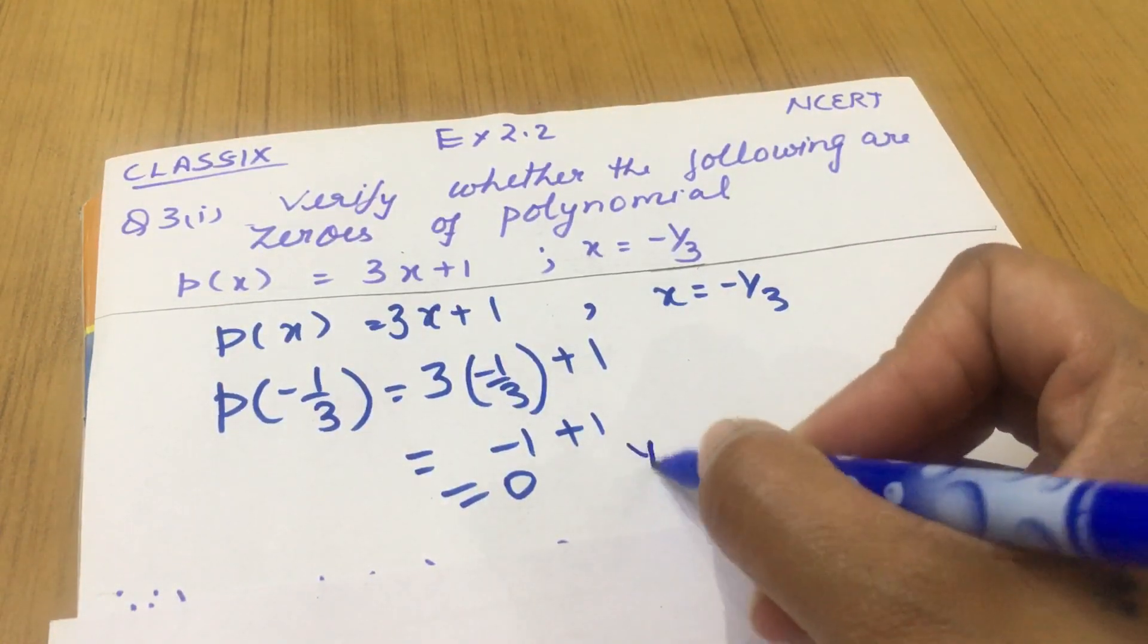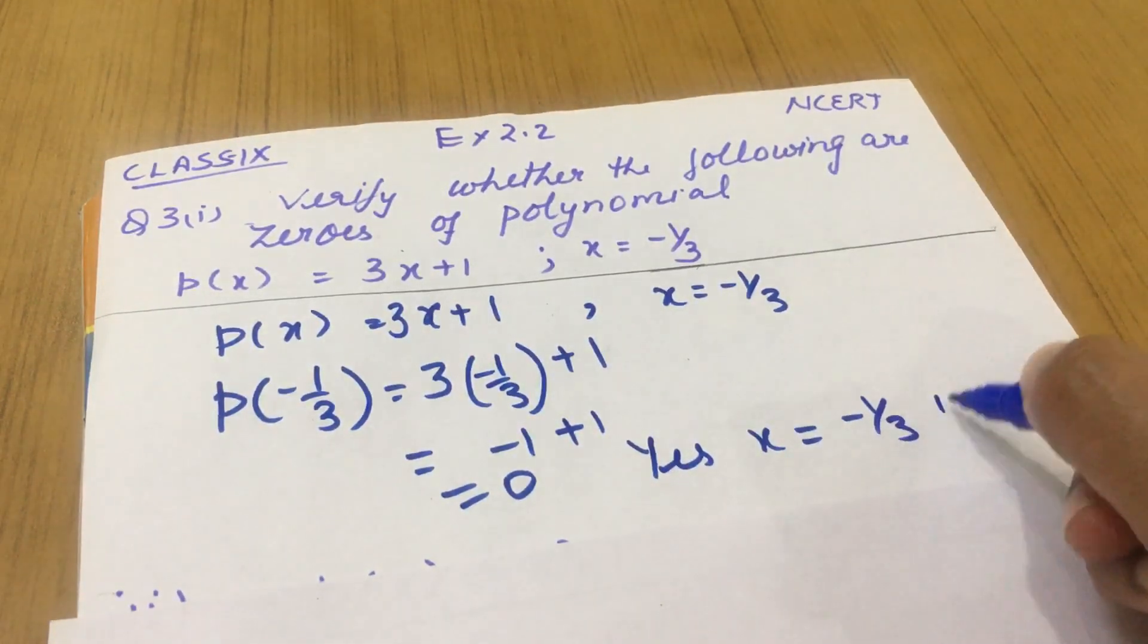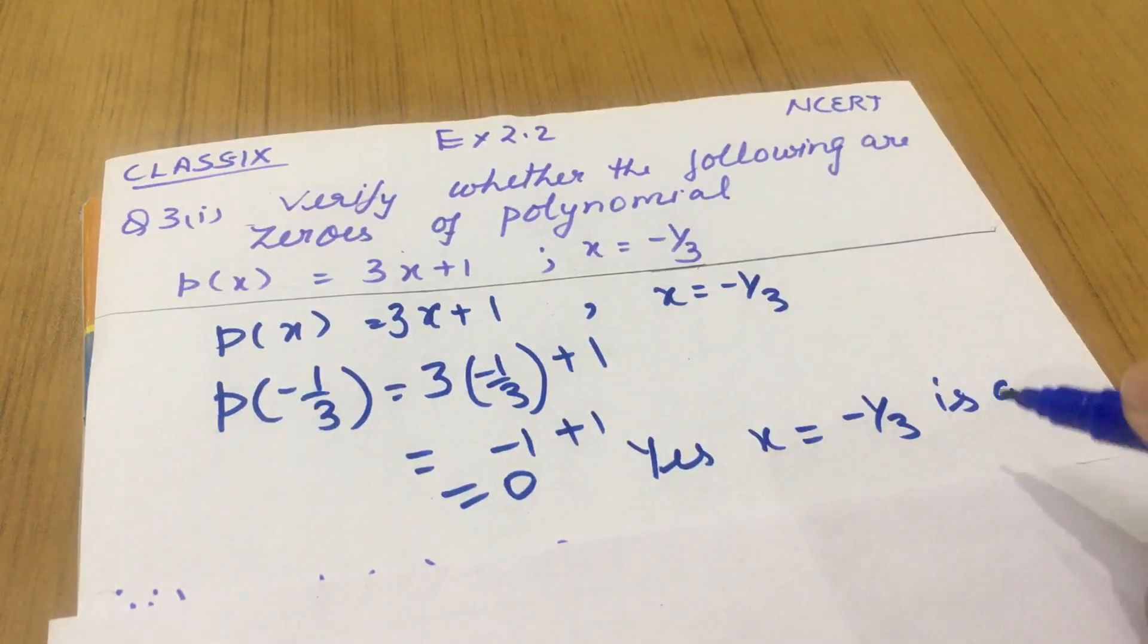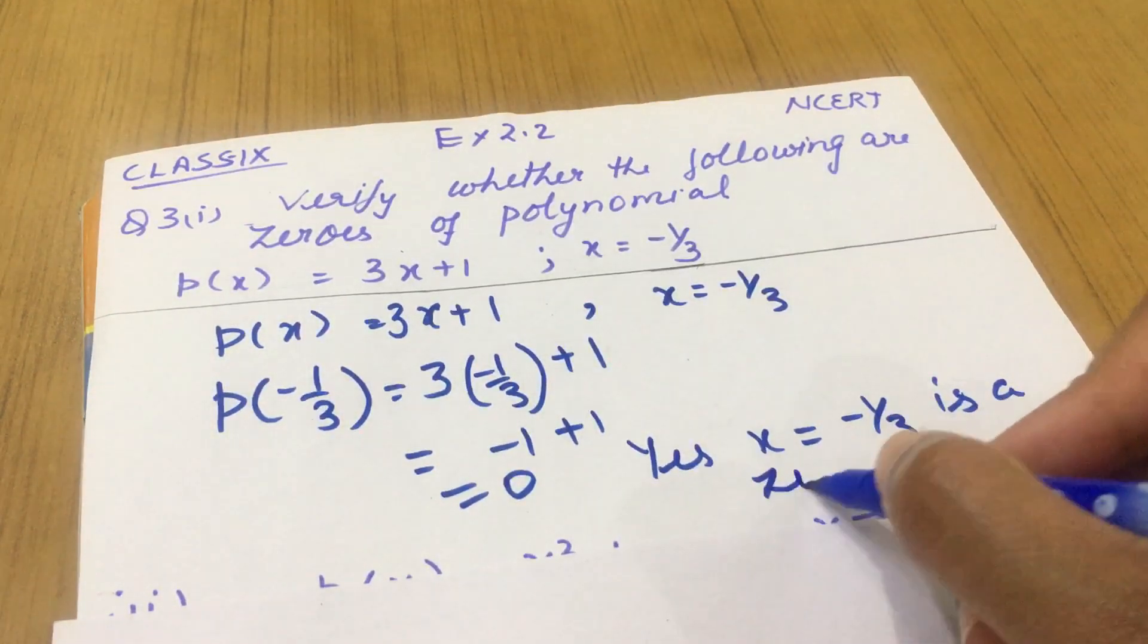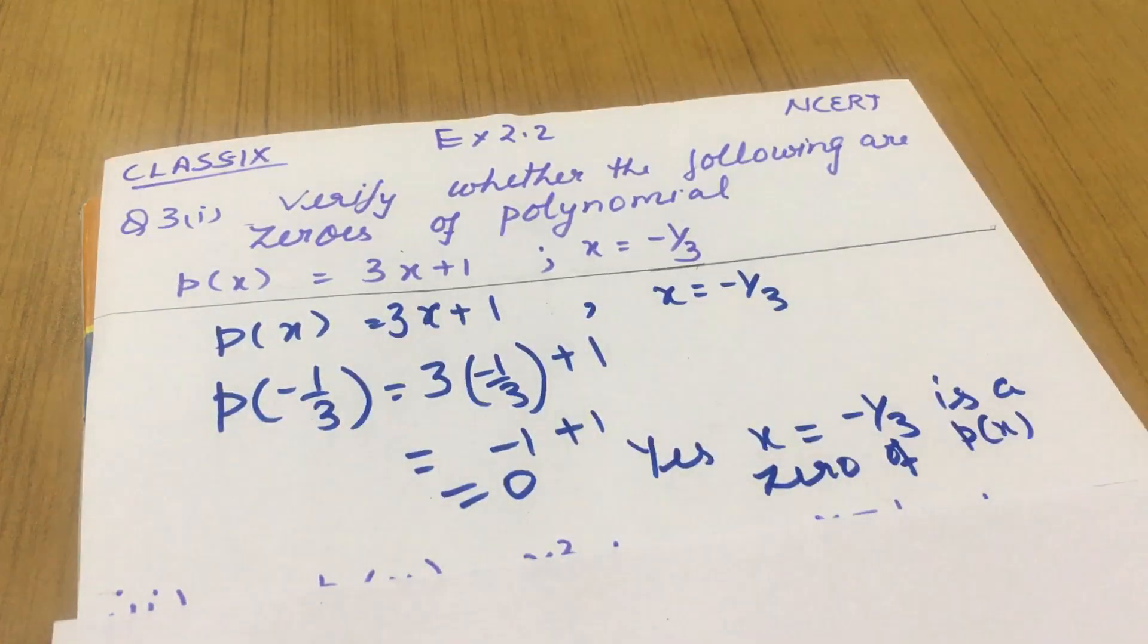Then you will write down, yes, x equals to minus 1 upon 3 is a zero of polynomial, or you can write down of p(x), right?